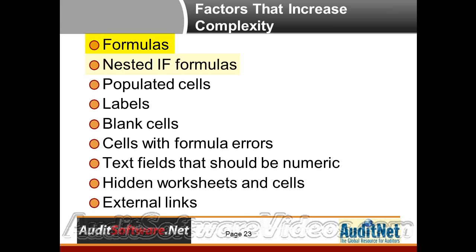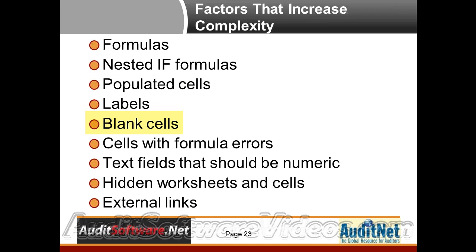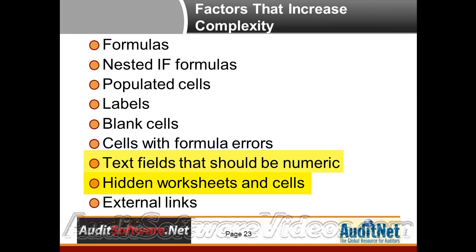We need to think about how many of the cells are populated, how many of them are blank within the data — which might be an error indicator. Cells with formula errors, like the N/A that we just talked about — that would be a formula error in Excel's terms. These are all things you can look for. Text fields that should be numeric, or numeric fields that should be text — like we just talked about.